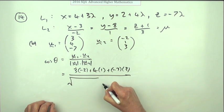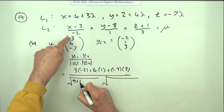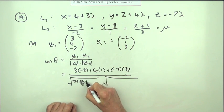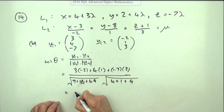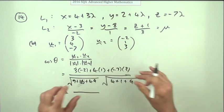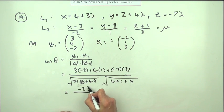And the lengths. Length of this, length of that. Just going to the squares. 9 plus 16 plus 49 for this one. 4 plus 1 plus 9. Getting negative 21. That comes to negative 23.